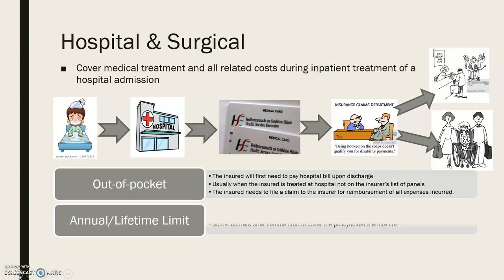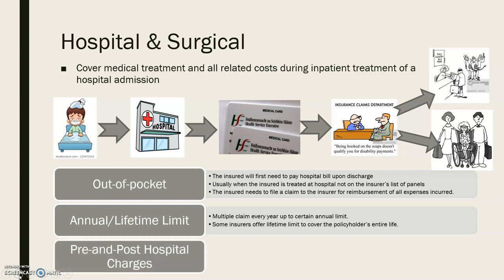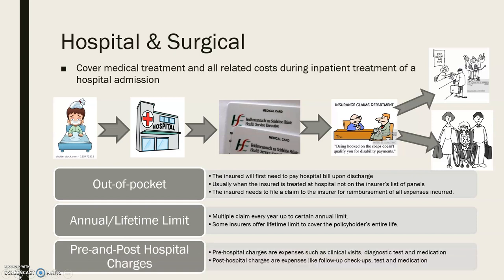Regarding annual or lifetime limits: multiple claims can be made every year up to a certain annual limit, and some insurers offer lifetime limits to cover the policyholder's entire life. Pre-hospital charges are expenses such as clinical visits, diagnostic tests, and medication, whereas post-hospital charges are expenses like follow-up check-ups, tests, and medication.